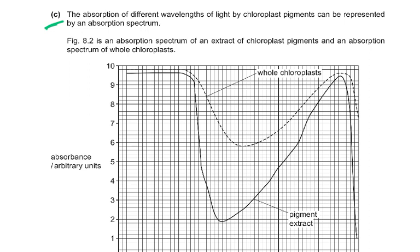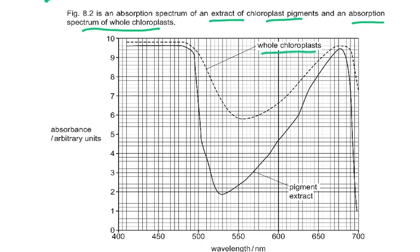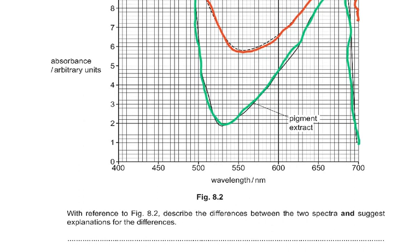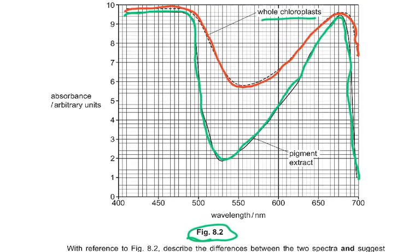Coming to part C: the absorption of different wavelengths of light by chloroplast pigments can be represented by an absorption spectrum. Figure 8.2 shows an absorption spectrum of an extract of chloroplast pigments and an absorption spectrum of whole chloroplasts. The whole chloroplast curve is coloured red and the pigment extract is in green. The two curves show similar peaks and troughs. Describe the differences between the two spectra and suggest explanations for the differences.